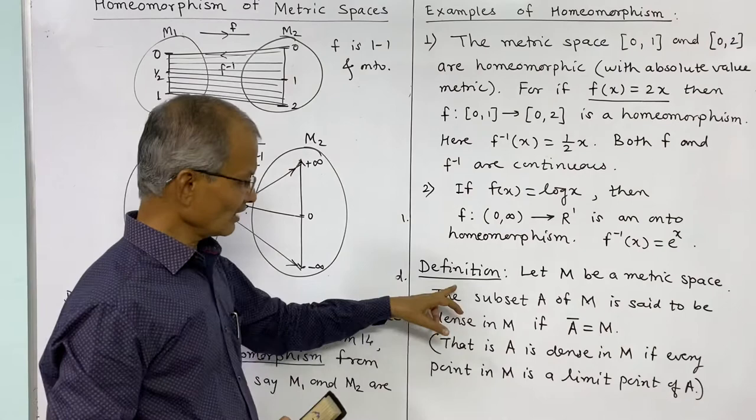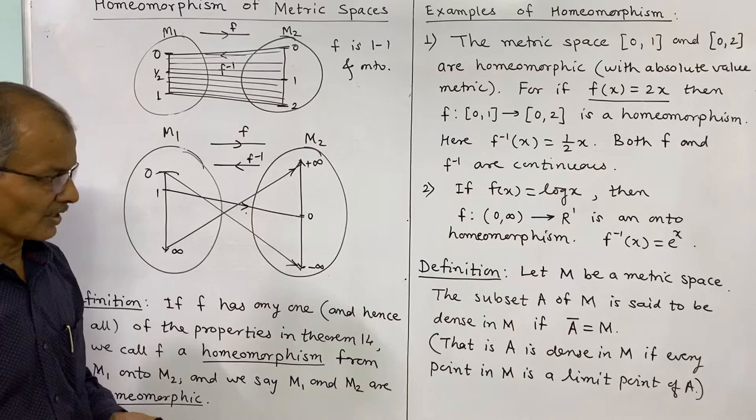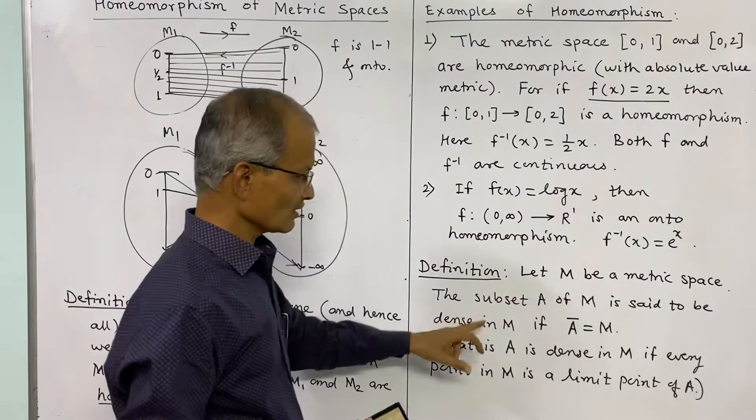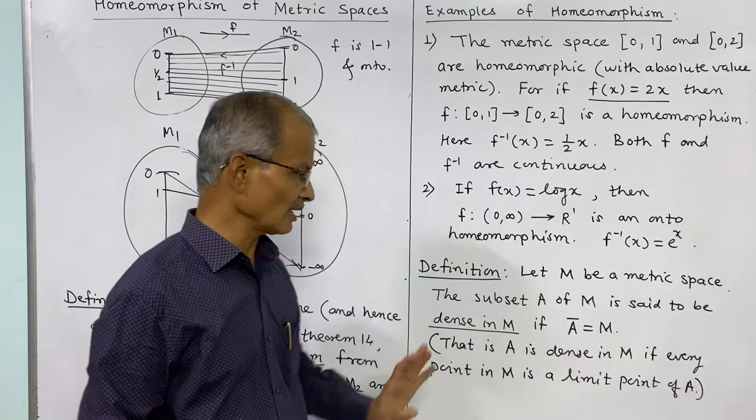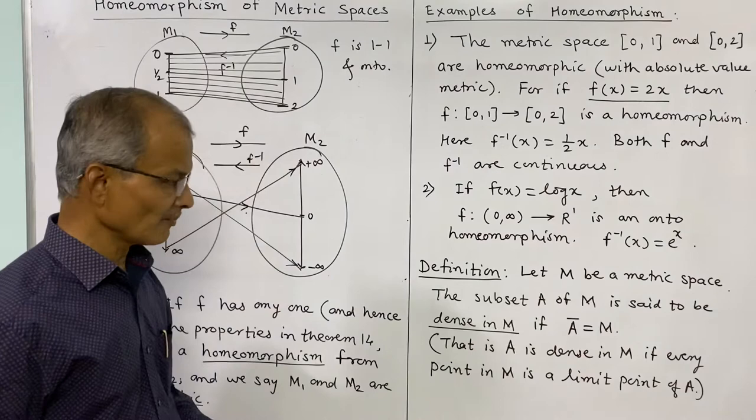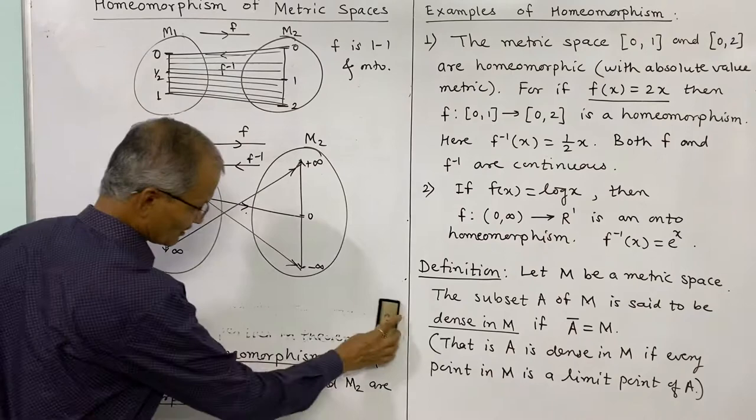Now we define the concept of a dense subset of a metric space. Let M be a metric space. A subset A of M is said to be dense in M if the closure of A equals the whole of M. Equivalently, A is dense in M if every point in M is a limit point of A.